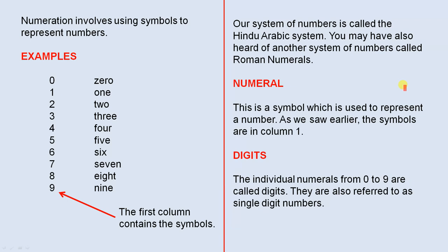A numeral is a symbol which is used to represent a number. As we saw earlier, the symbols are in column 1, and they represent numbers. Digits - the individual numerals from 0 to 9 are called digits. They are also referred to as single-digit numbers.